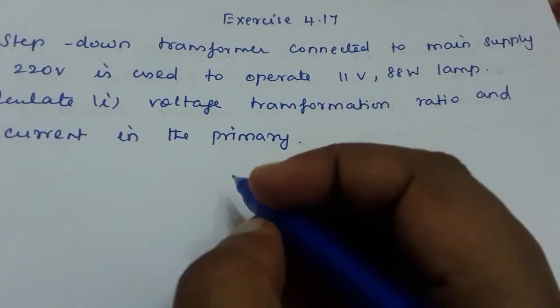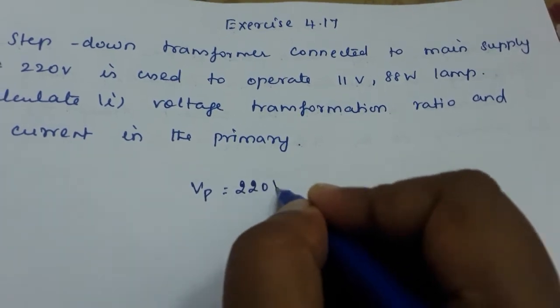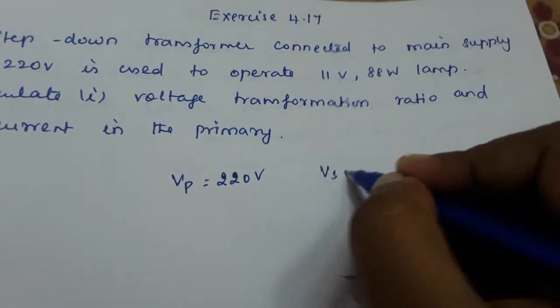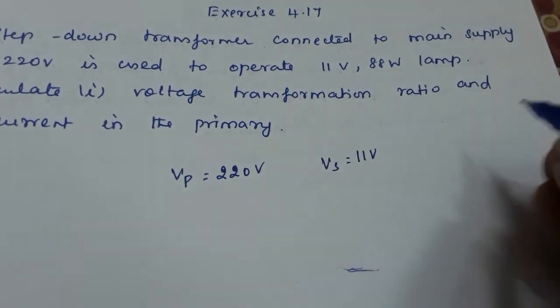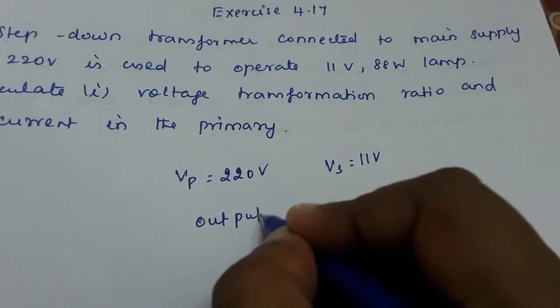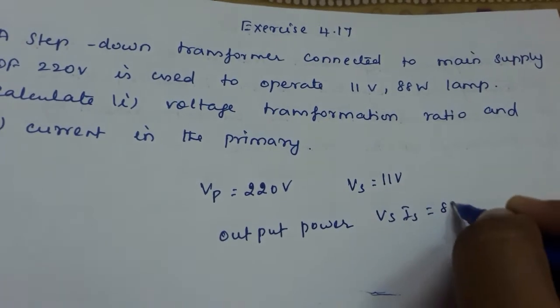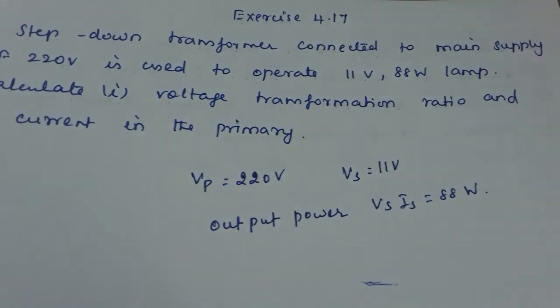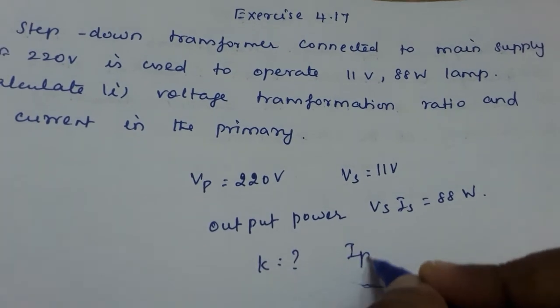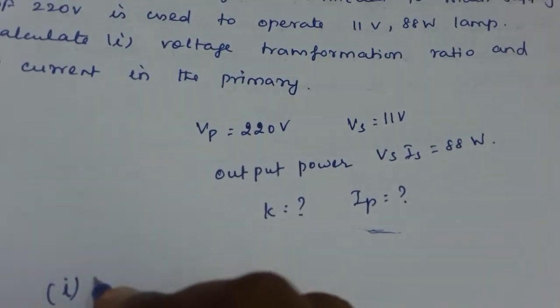Now a step-down transformer is connected to a main power supply, so here your Vp is given. Vp is equal to 220 volt, that is your primary voltage. And the secondary voltage is given as 11 volt, and the power is given as output power, that is VsIs is equal to 88 watt. Now we have to find out the transformer ratio k value and the primary current Ip value. So first we can go for finding the transformer ratio.